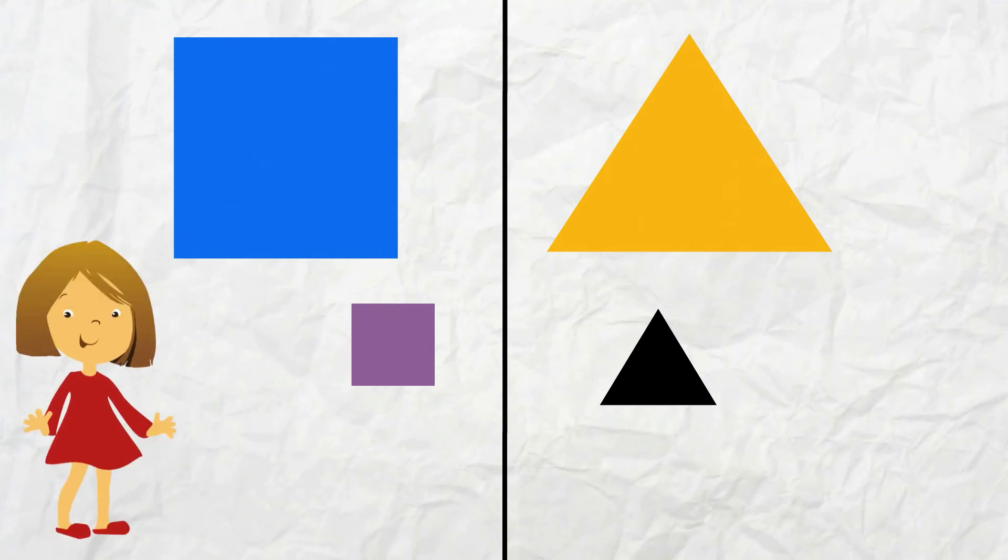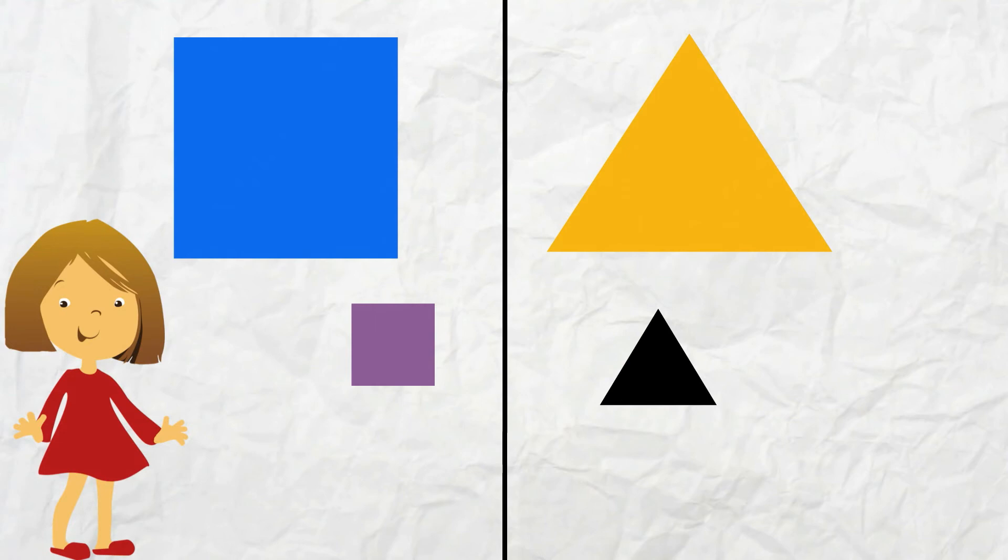We could also sort these shapes by size if we wanted to. We could put the big shapes together and the small shapes together, like this.